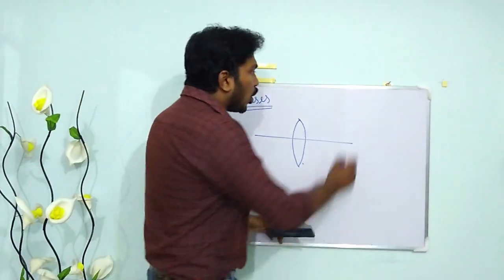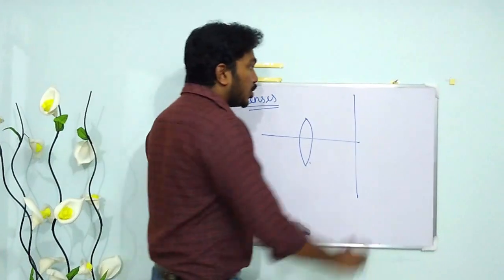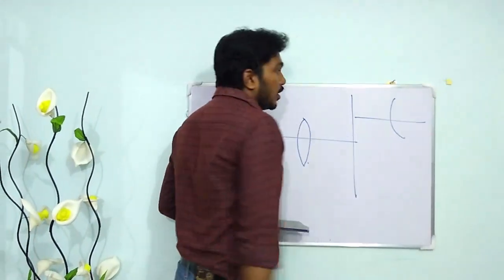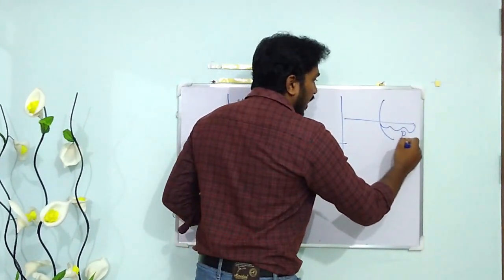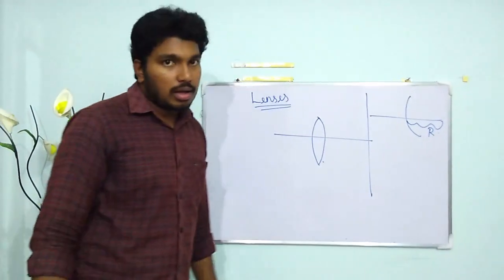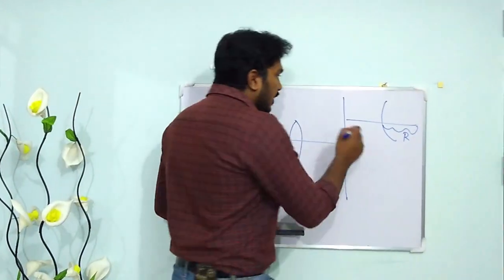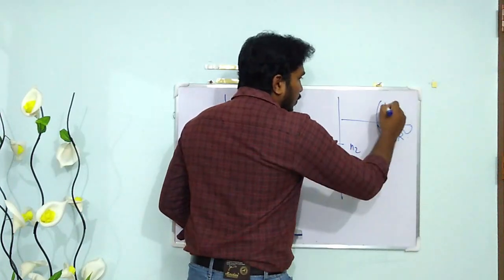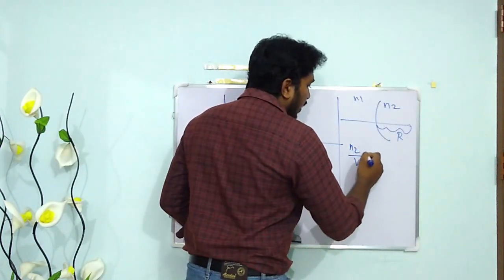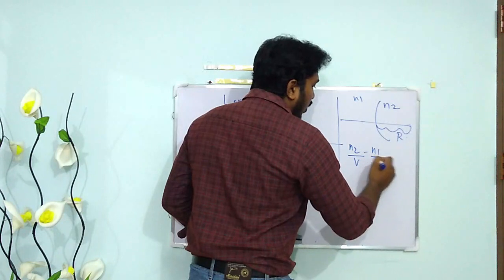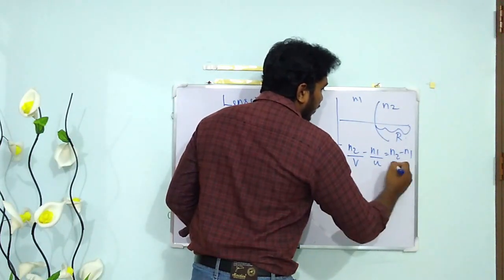When you talk about a spherical refracting surface, you should know the governing condition. Suppose this is a spherical refracting surface with radius of curvature R. We can write: N2/V minus N1/U is equal to (N2 minus N1) divided by R.